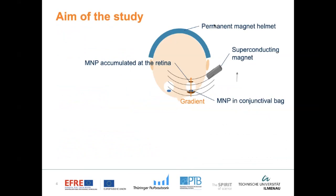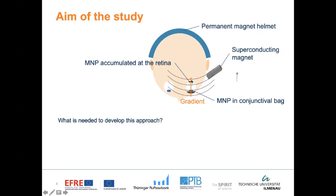What is the aim of our study? First, we have the particles and we will place them in the conjunctival bag, which will serve as a depot. Then we have a magnetic system that generates a magnetic gradient, and this magnetic gradient transports the particles into the deeper regions of the eye.